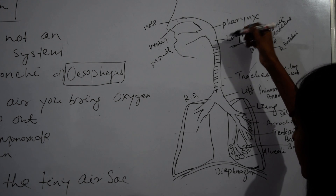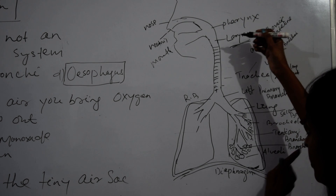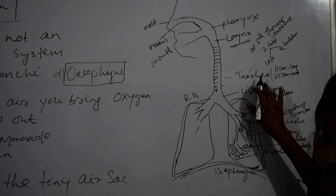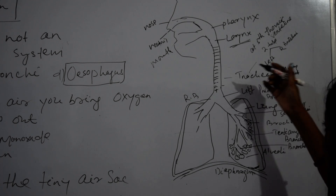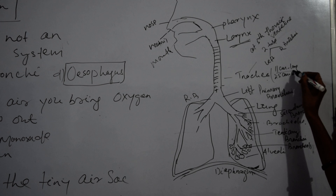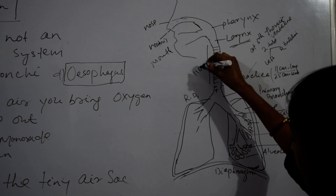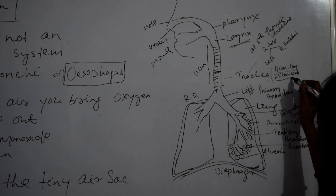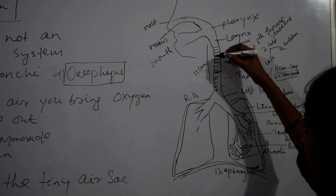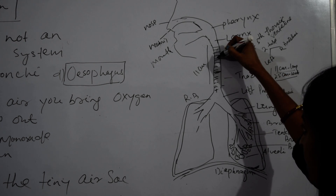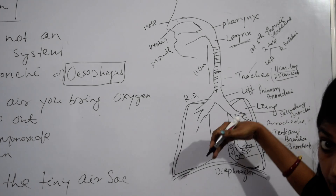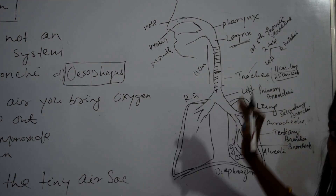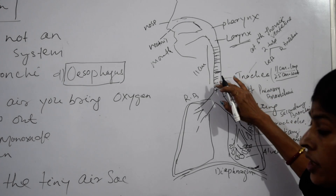Pharynx leads to the larynx. After the larynx comes the trachea. The trachea is 11 cm long and 2.5 cm wide. Ring-like structures are present in the trachea so that when we take in air, the pipe does not collapse.